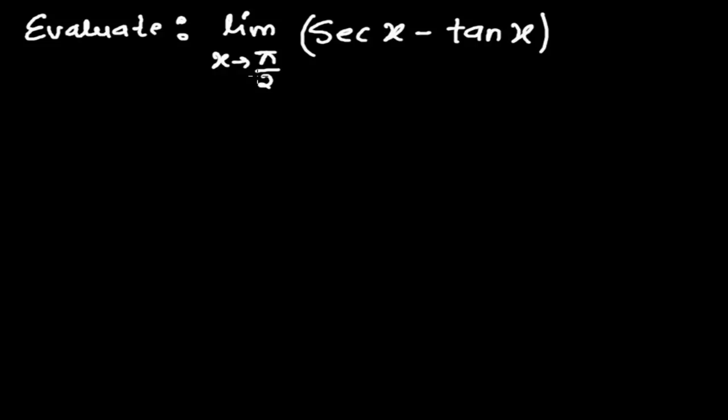So you know, π/2 is exactly 90 degrees. π means 180 degrees, right? And π/2, that is 180/2, that is exactly 90. So when limit x tends to 90, sec 90 minus tan 90...